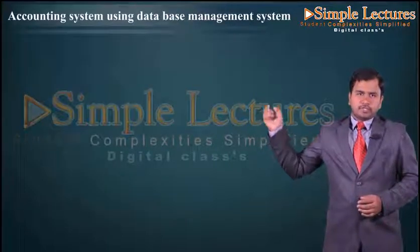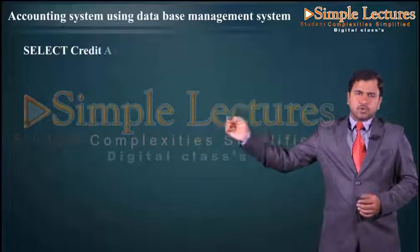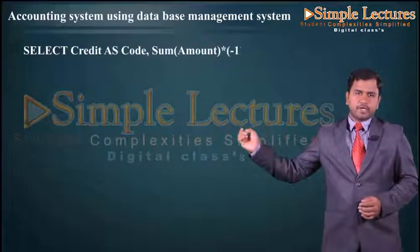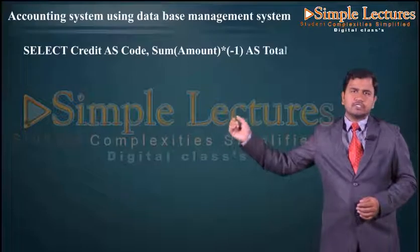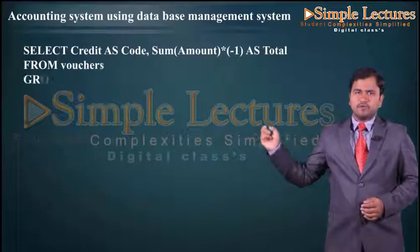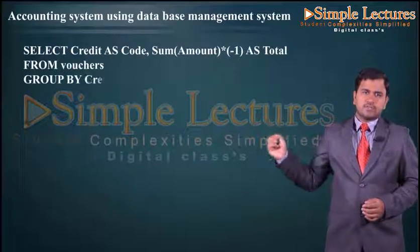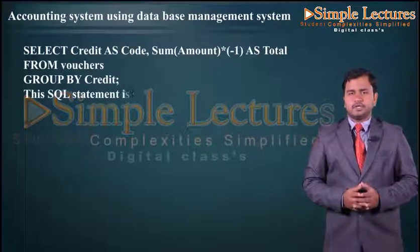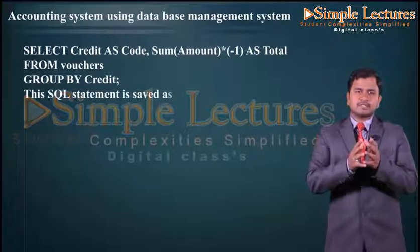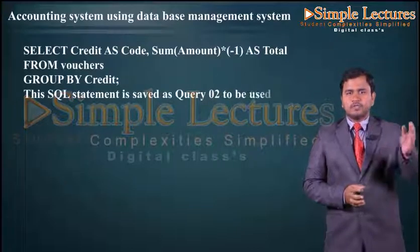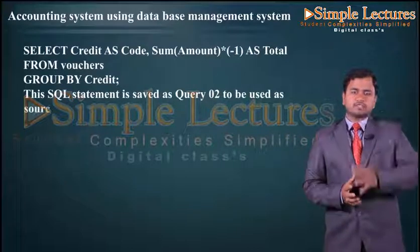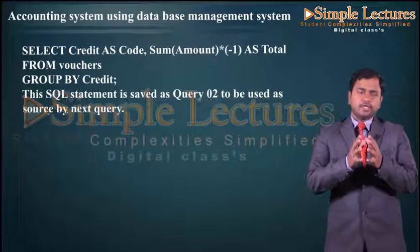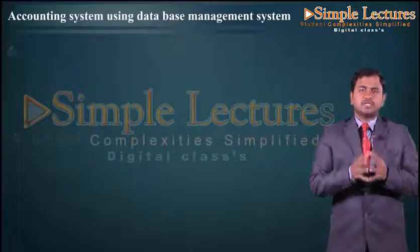Accordingly, the following SQL statement is formed: SELECT credit AS code, SUM(amount) * -1 AS total FROM vouchers GROUP BY credit. This SQL statement is saved as Query 02 to be used as the source by the next query.